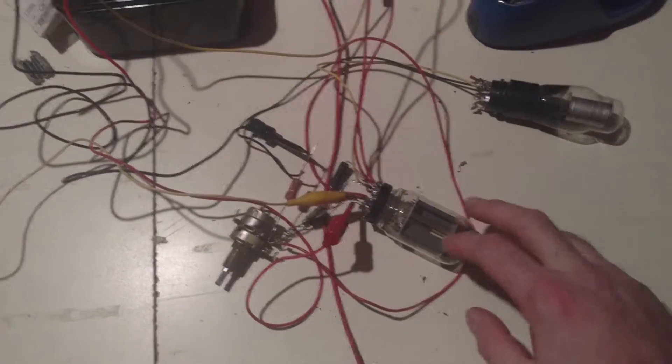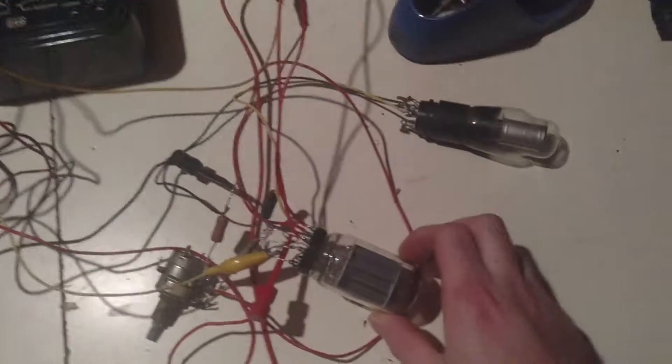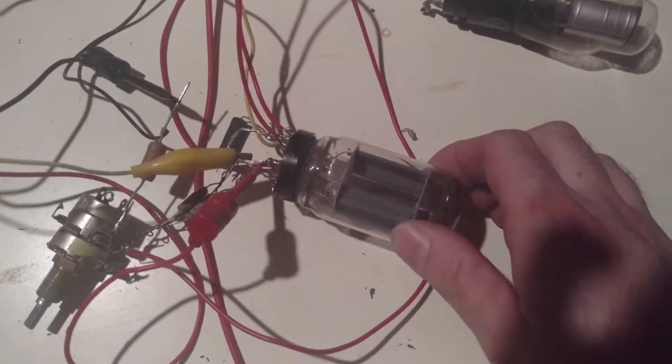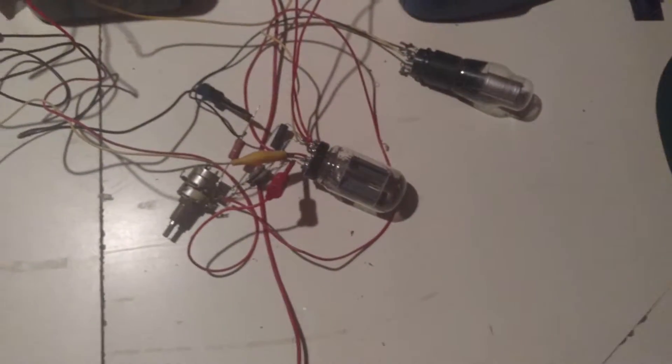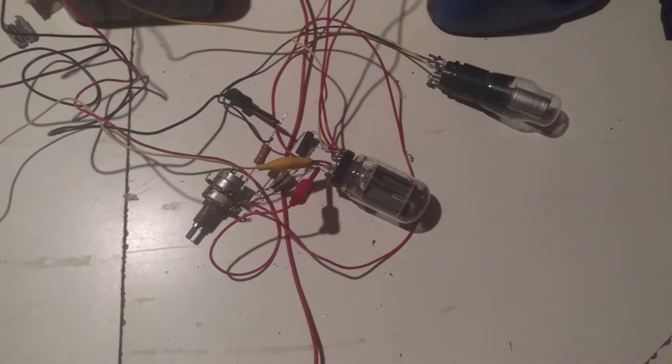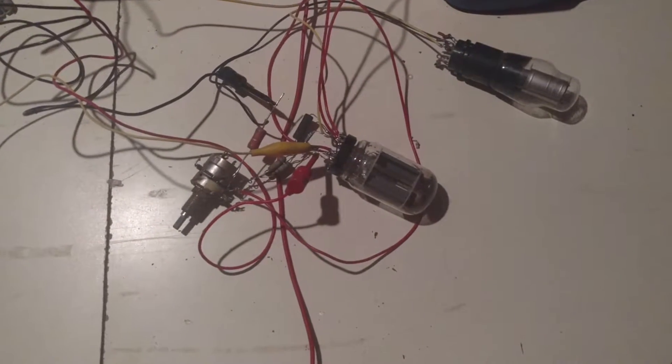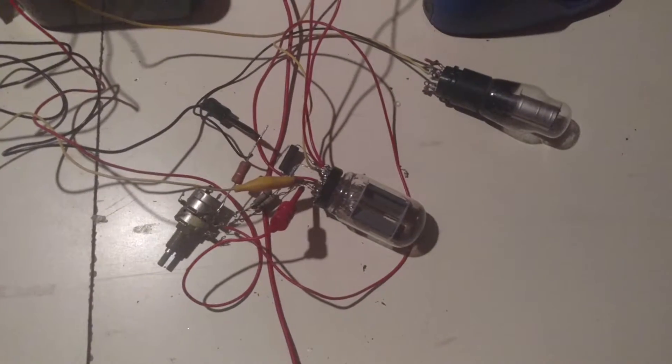Besides that, we have a dual-section tube. There is a triode and there is a beam pentode in there or a beam tetrode. It's a 6LU8 or a similar pinout. I've got a couple of these that aren't marked really well, but they do work. It's a pretty tolerant design it seems.